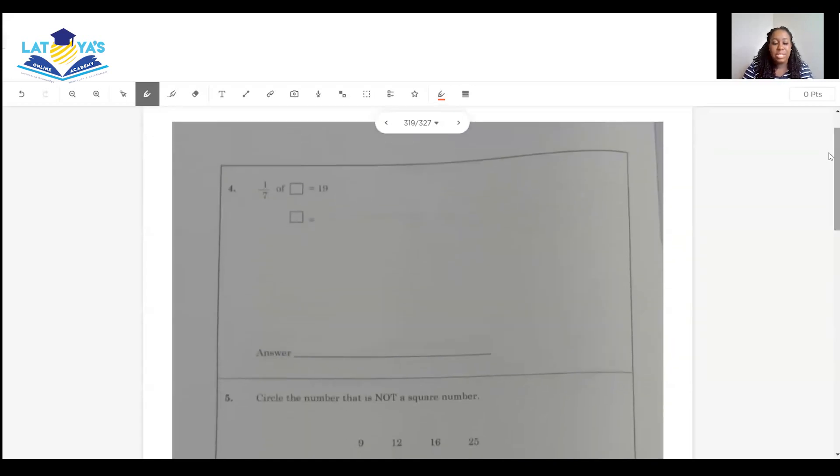The next page would have looked like this. 1/7 of something is equal to 19. What is that something? What is missing from this box? So instead of multiplying, we'll have to do the opposite operation and divide. So it's going to be 19 over 1. Change my division sign to a multiplication sign. Flip this fraction. I'm going to get 7 over 1. And I'm going to multiply 19 by 7.